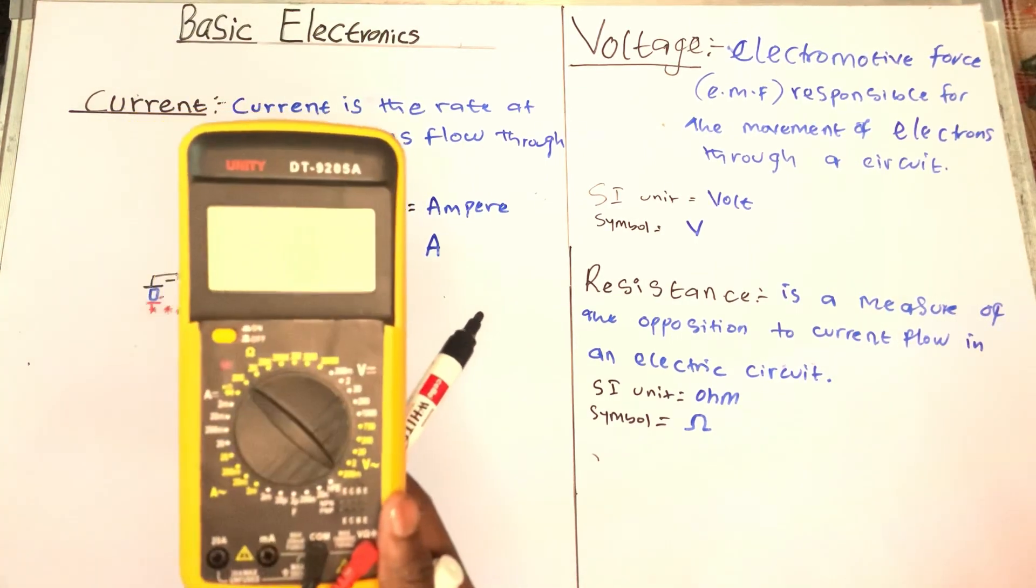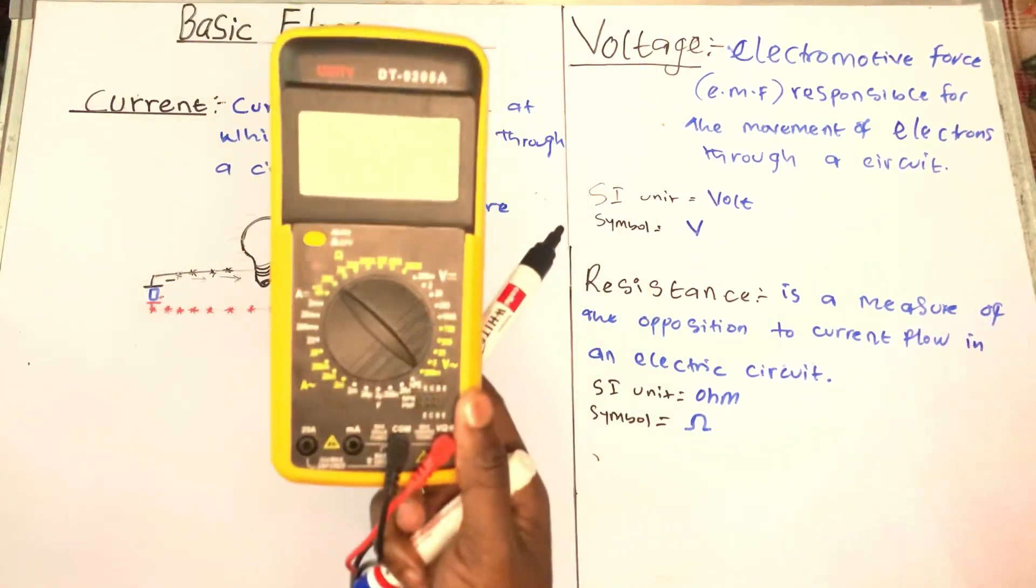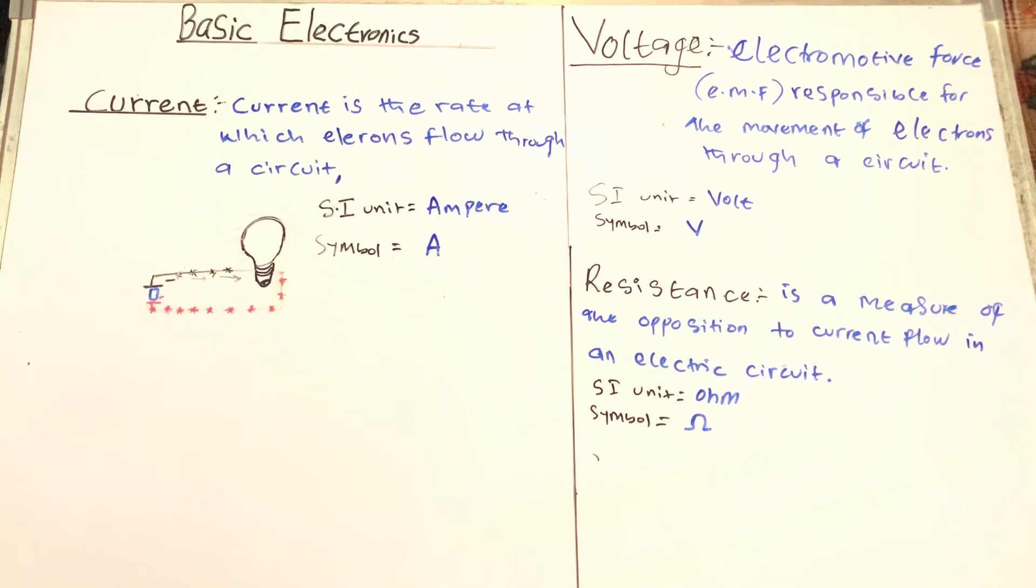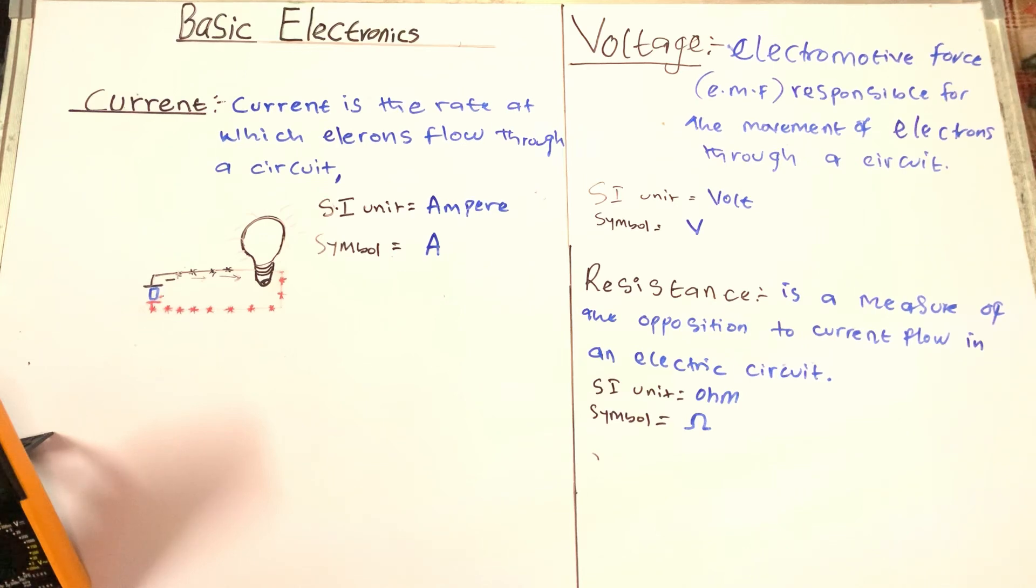So let's see, for example, this is a multimeter. Here current is indicated here as you see A, as you can see from here. Now we all know that current is the electrons, the charges that move to and fro through the electric circuit, and it is measured in form of amperes. So the next thing we should understand is voltage.